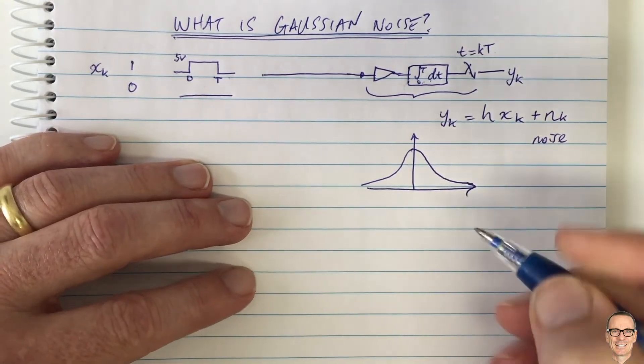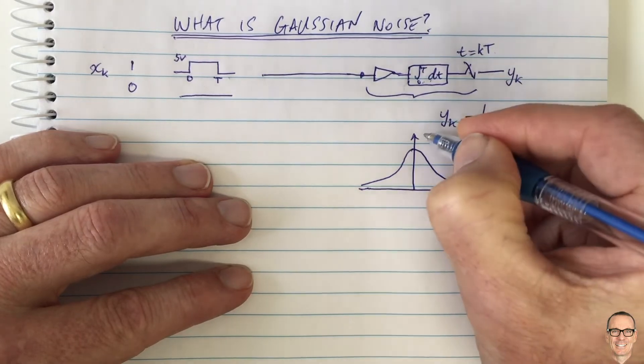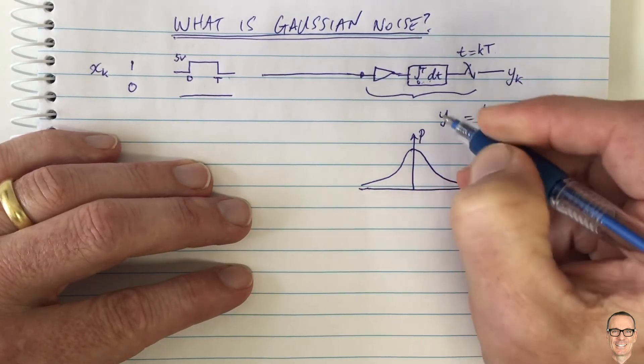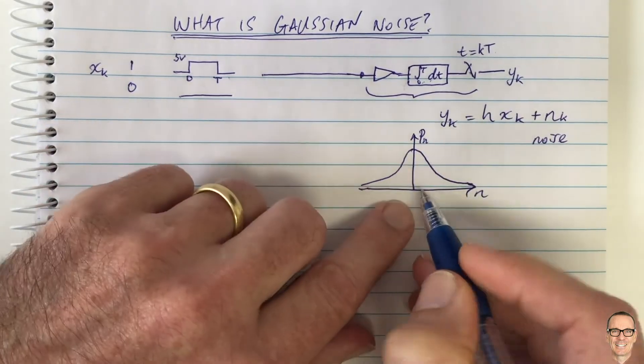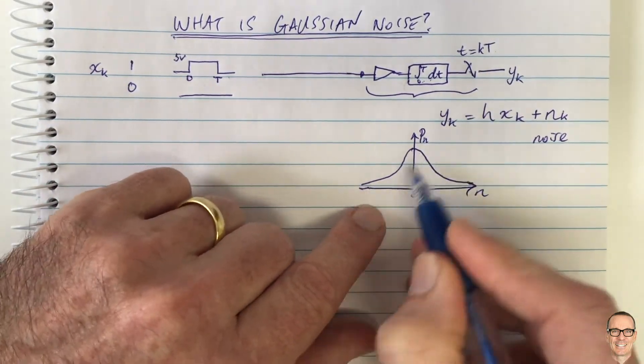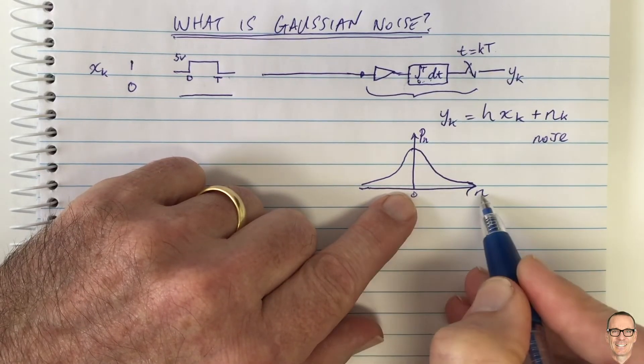then the overall effect has a probability density function, which is this well-known and very common bell-shaped curve. Okay, so what this means is that if this was n here, for example, and this is the density of the probability of getting that value of n, then for, and this is zero, for example,